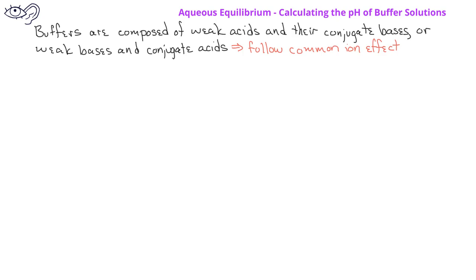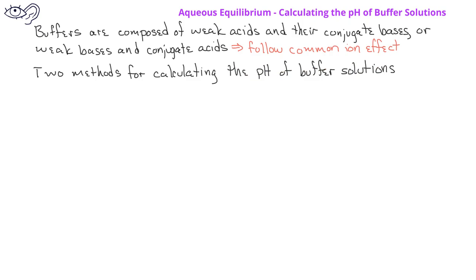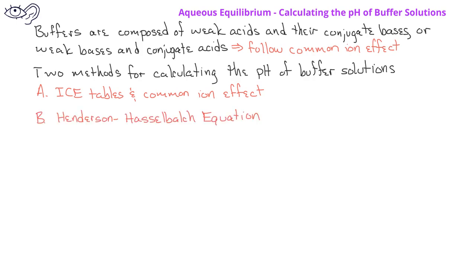How does the presence of the common ion effect alter the way that we calculate the pH of a buffer solution? In this video, we'll learn two methods for determining the pH of a solution. In the first method, we'll use ICE tables along with the common ion effect to find the pH of a buffer solution. In the second method, we'll introduce the Henderson-Hasselbalch equation, which can be used to calculate the pH of a buffer solution.